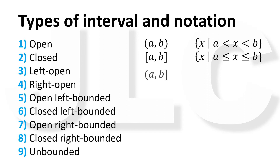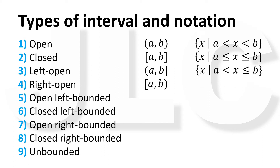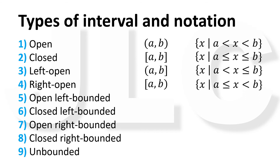A half-open interval excludes only the left or right endpoint. A left-open interval is the set of all x such that x is greater than a but less than or equal to b. A right-open interval is the set of all x such that x is greater than or equal to a but less than b.